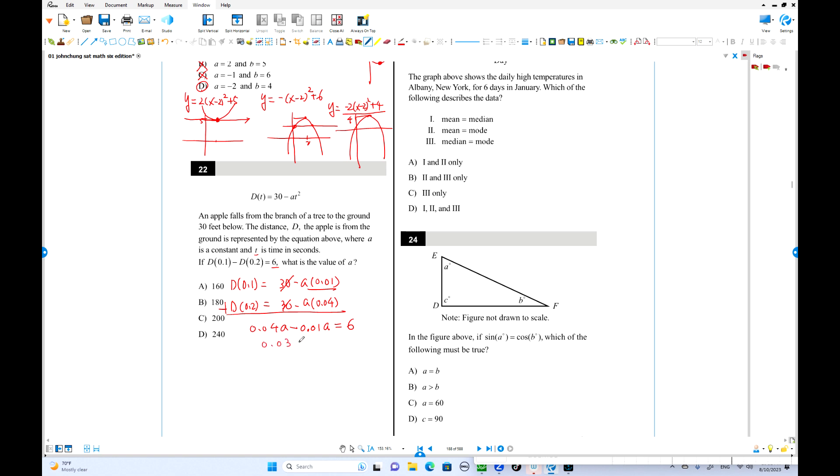0.03a equals 6. So a equals how much? You can divide by 0.03, which is 200. That's the answer. Now let's finish this video here. So we continue in next video.